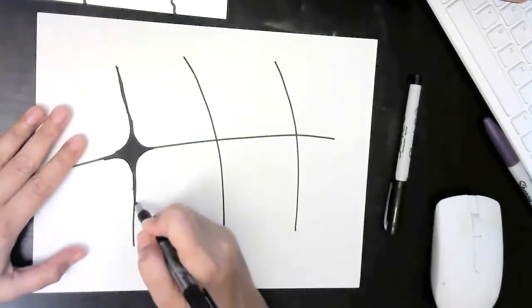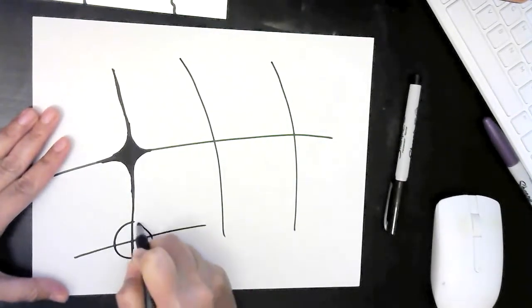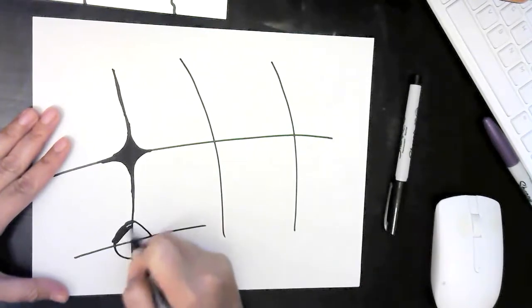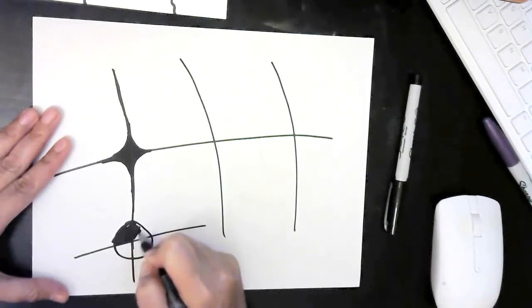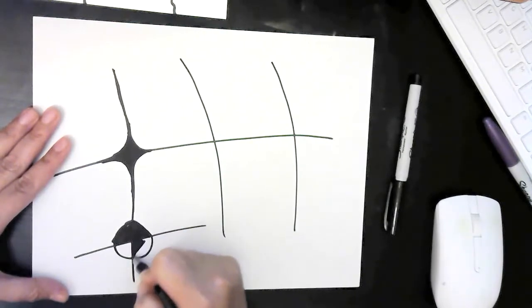Sometimes people ask me, and they say, can I do a rounding process like this? And I tell them that the difference is, as though you add the circle, which is an important shape in neurographica,